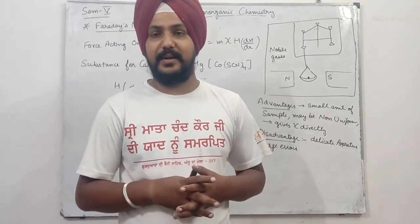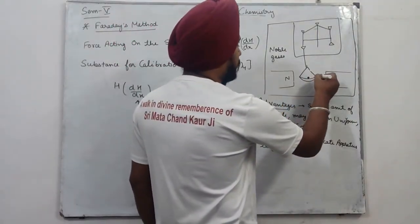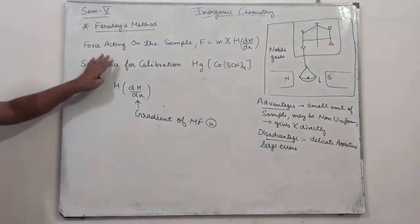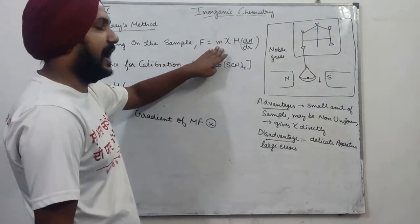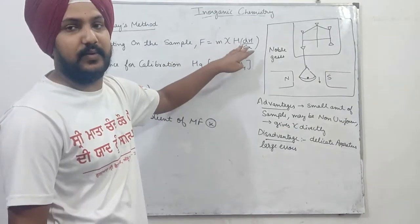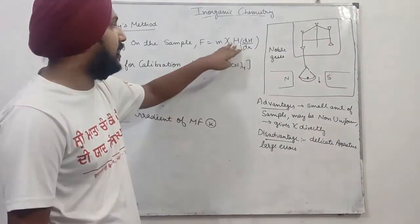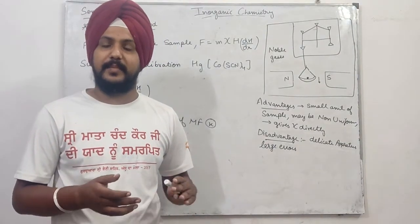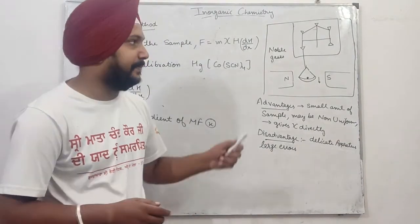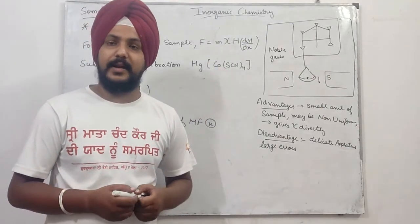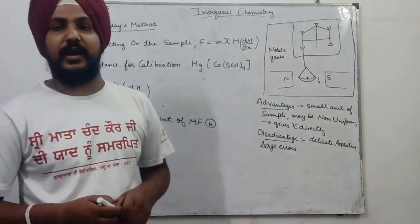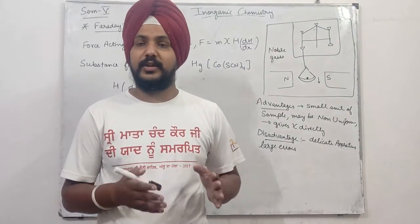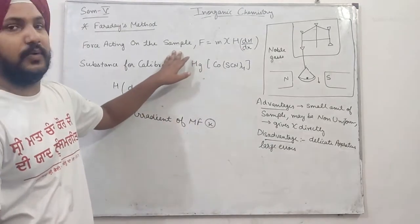जब sample magnetize होगा तो एक small downward force act करेगा। उस small force की value होती है: F = M × χ × H × dH/dX। यहाँ H magnetic strength है और dH/dX gradient of the magnetic field है।